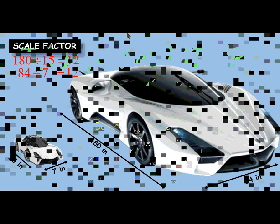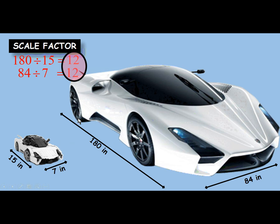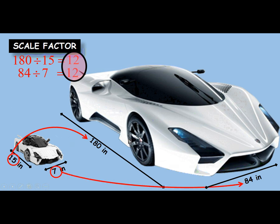Remember back when we had this problem — we talked about similarity and something called scale factor. The scale factor, 12 in this case, is just the measurement that tells us how many times larger one object is than the other. We have these two cars here; they're the same shape, just different sizes. Every measurement in the little car could be multiplied by 12, the scale factor, to find the corresponding measurement in the larger car. Or you can go backwards and divide any measurement in the large car by 12 to get the corresponding measurement in the small car.